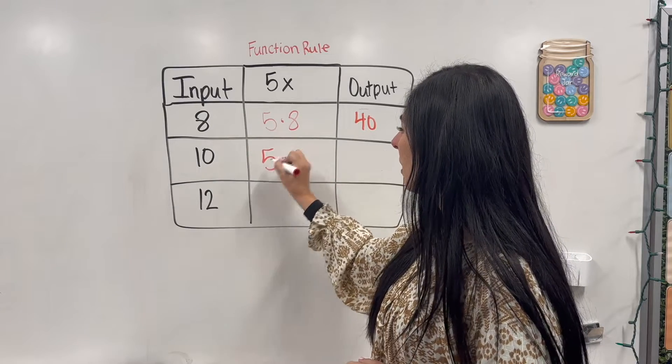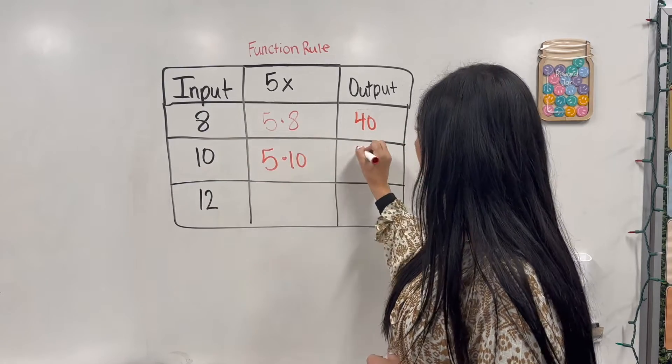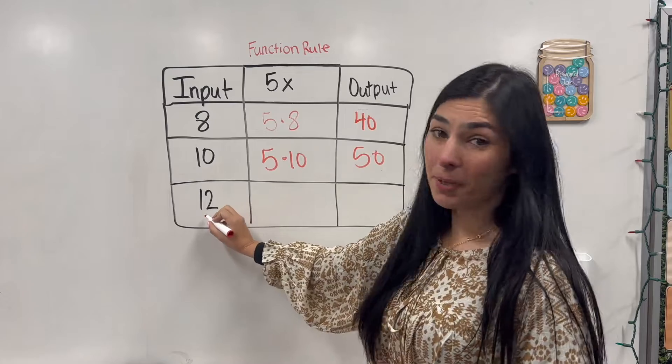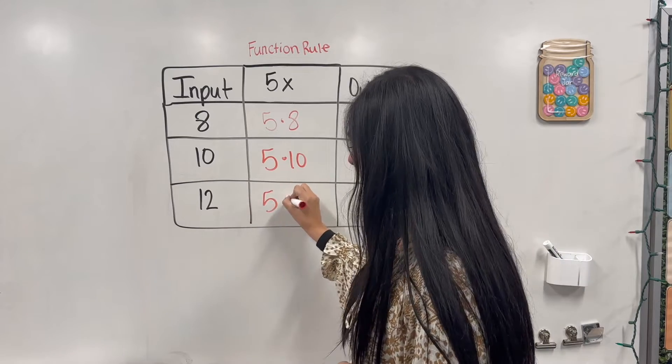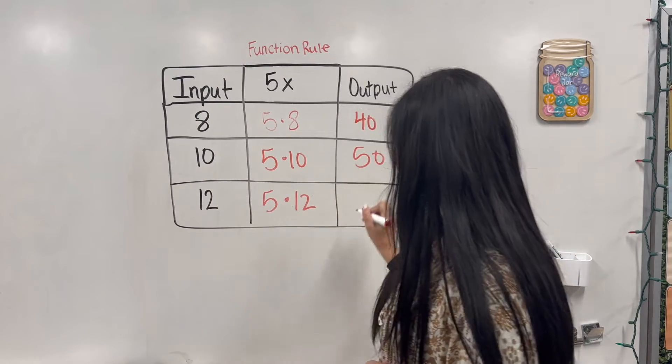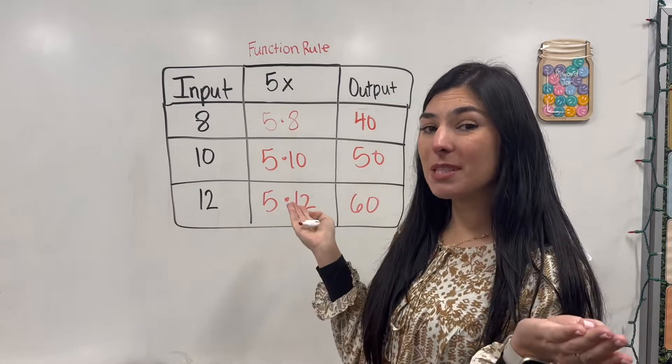Plug in our 10. We're going to get 50. Plug in our 12. 5 times 12. And we're going to get 60. Simple, simple.